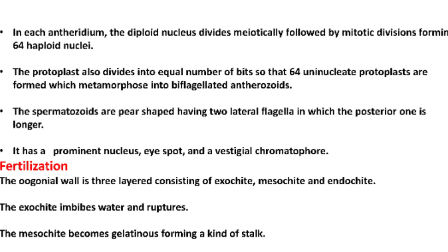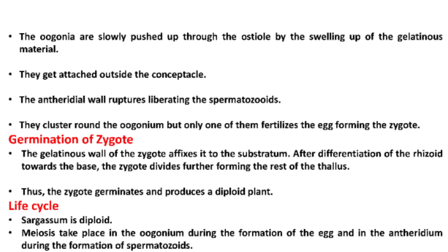Fertilization. The oogonial wall is three-layered, consisting of exochite, mesochite, and endochite. The exochite imbibes water and ruptures. The mesochite becomes gelatinous, forming a kind of stalk. The oogonia are slowly pushed up through the ostiole by the swelling up of the gelatinous material. They get attached outside the conceptacle. The antheridial wall ruptures, liberating the spermatozoids. They cluster around the oogonium, but only one of them fertilizes the egg, forming the zygote.